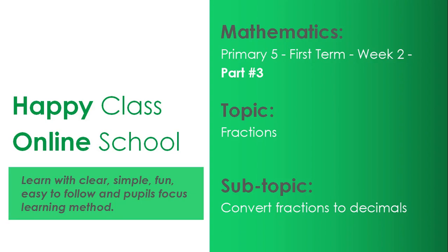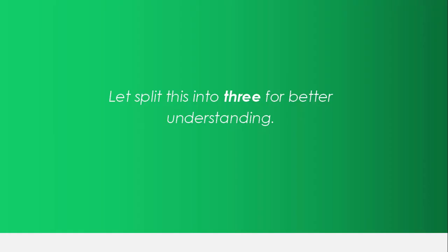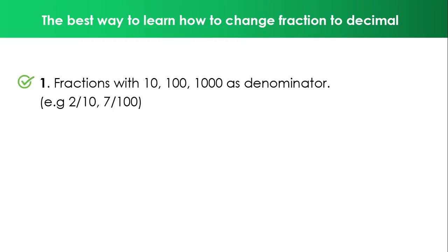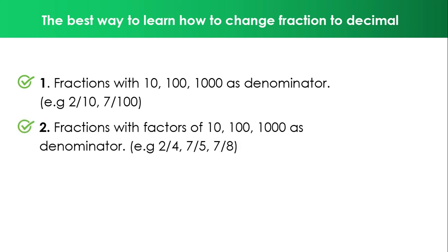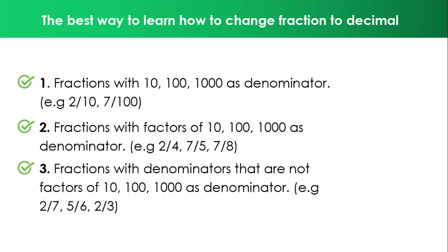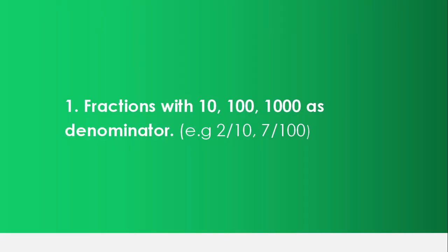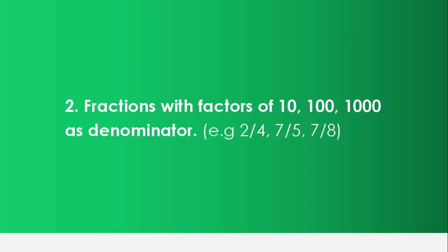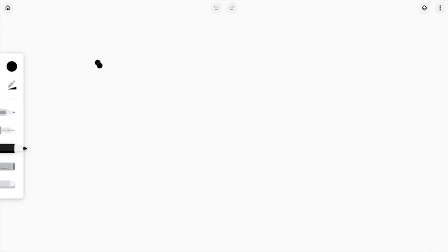Welcome back to RP Class Online School. We are still in Math Program 5, fourth term, week two — this is fractions. We are converting fractions to decimals. Remember, we split this topic into three parts: fractions with 10, 100, and 1000 as denominator; fractions with factors of 10, 100, and 1000 as denominator; and fractions with denominators that are not factors of 10, 100, and 1000. We already did the first one, so now let's move to the board for the second one.